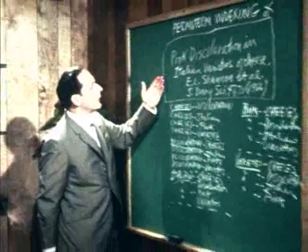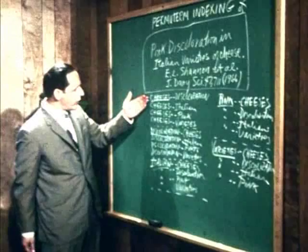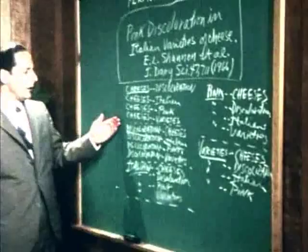For example, in this article on pink discoloration in Italian varieties of cheese, the computer has created all of these permuted pairs. Thus, when using the permuterm index, the searcher will be able to find the article no matter which of these permuted pair headings he uses.